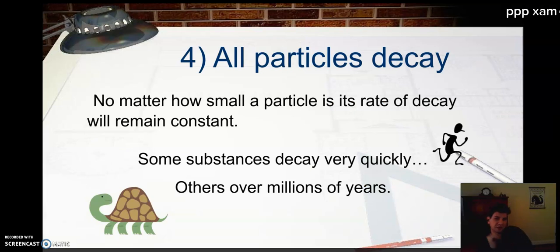So all particles decay. No matter how small a particle is, its rate of decay will remain constant. There's nothing you can do to change it. You can throw it out a window, set it on fire, hit it with a truck. It will always decay at the same rate. Now some substances decay quick, and some go slow. But that's really the main difference.